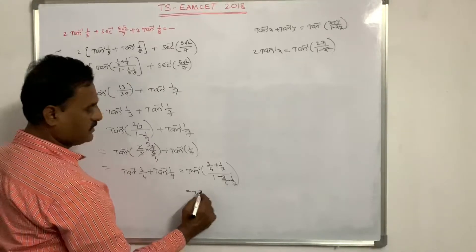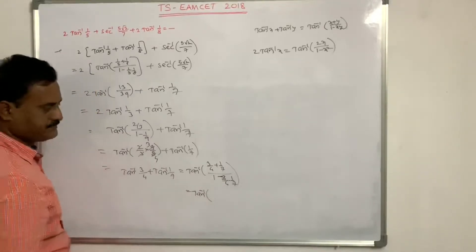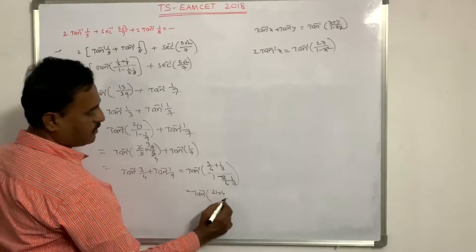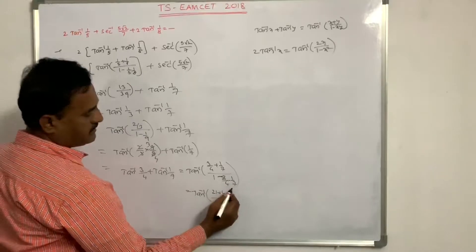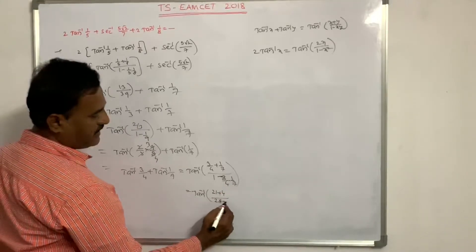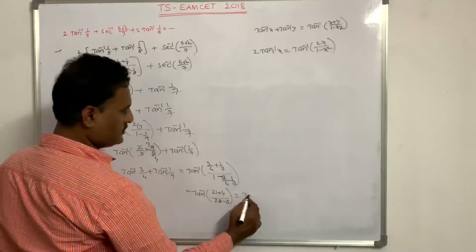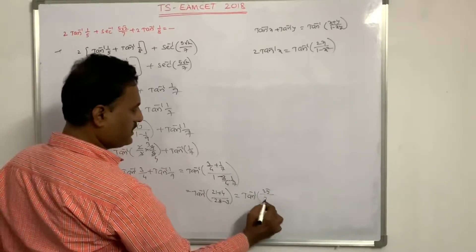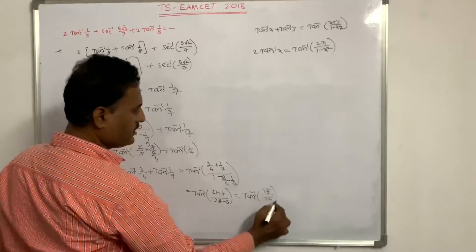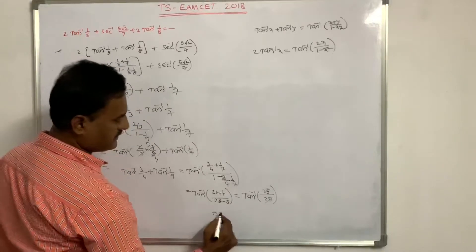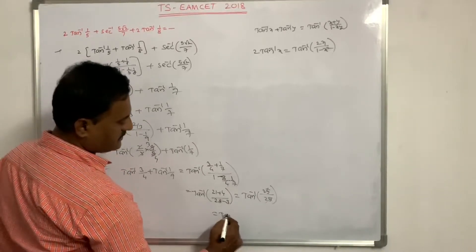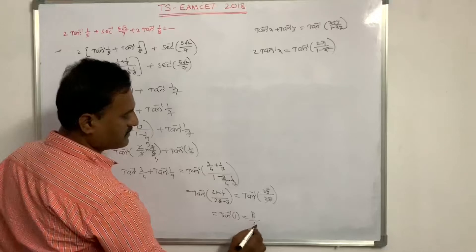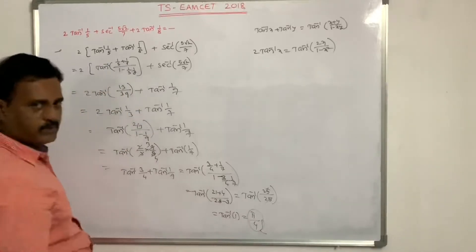That is tan⁻¹[(21 + 4) / (28 − 3)] = tan⁻¹[25/25] = tan⁻¹(1). The value of tan⁻¹(1) is π/4. Hence proved.